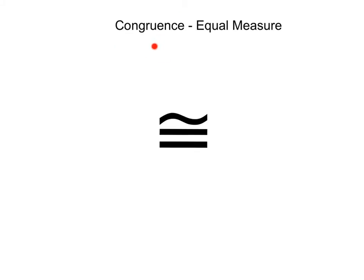Next up is congruence. Congruence basically means that two things have equal measure. And we use this little equal sign squiggly on top symbol to represent congruence.